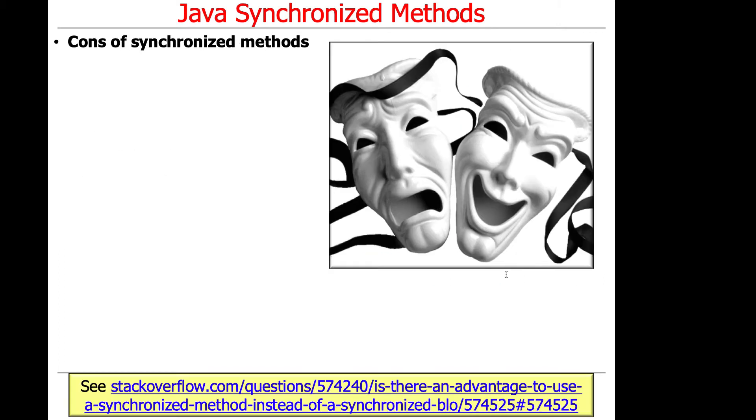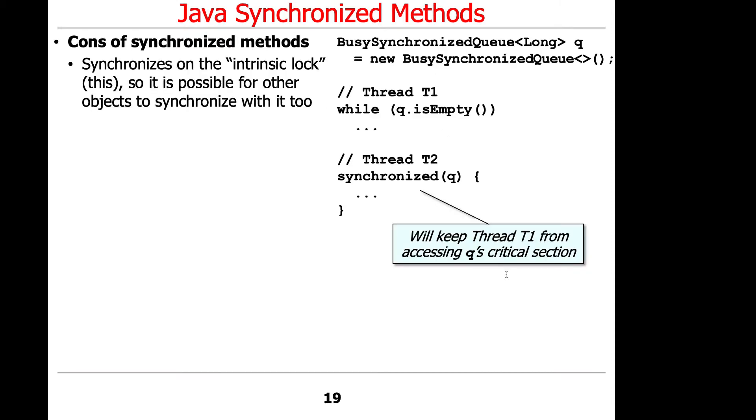There are some downsides, of course. So one problem is that synchronization, the synchronized keyword, always works on the intrinsic lock, which is part of this, this object. So oddly enough, it's therefore possible for other objects to synchronize with it too. Now this is a kind of a bizarre use case, but there's nothing to stop you from doing this.